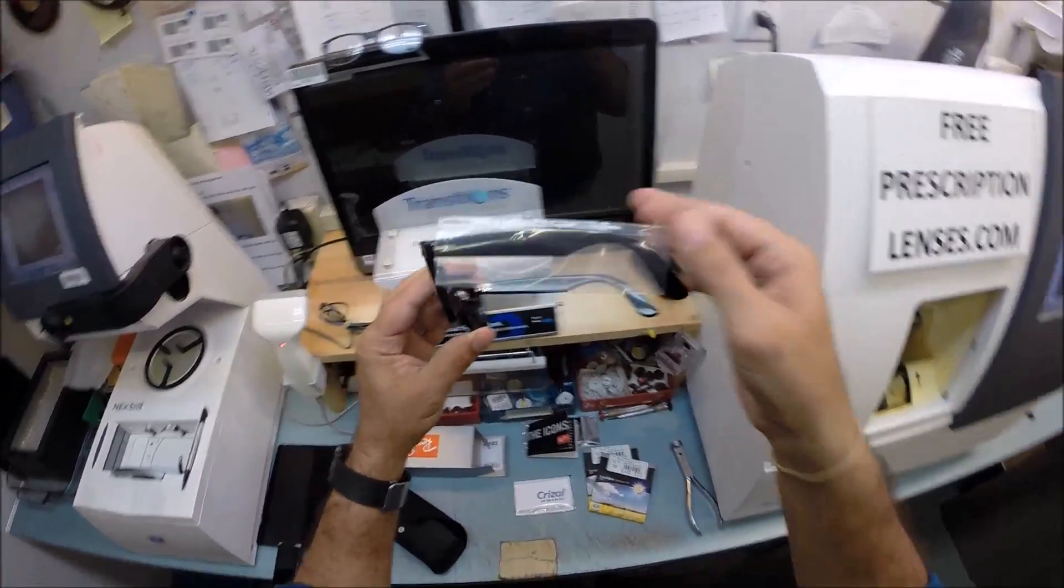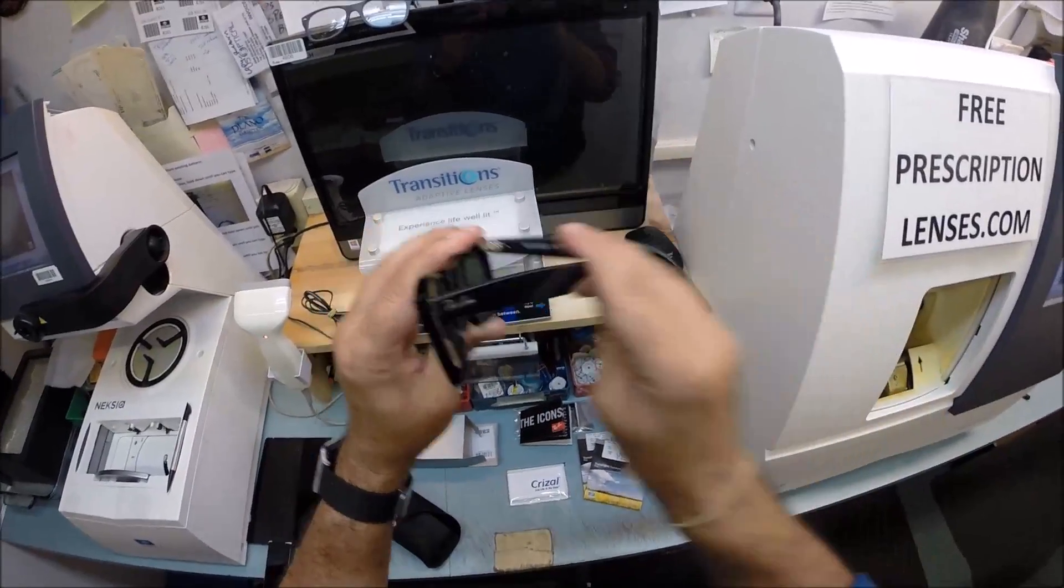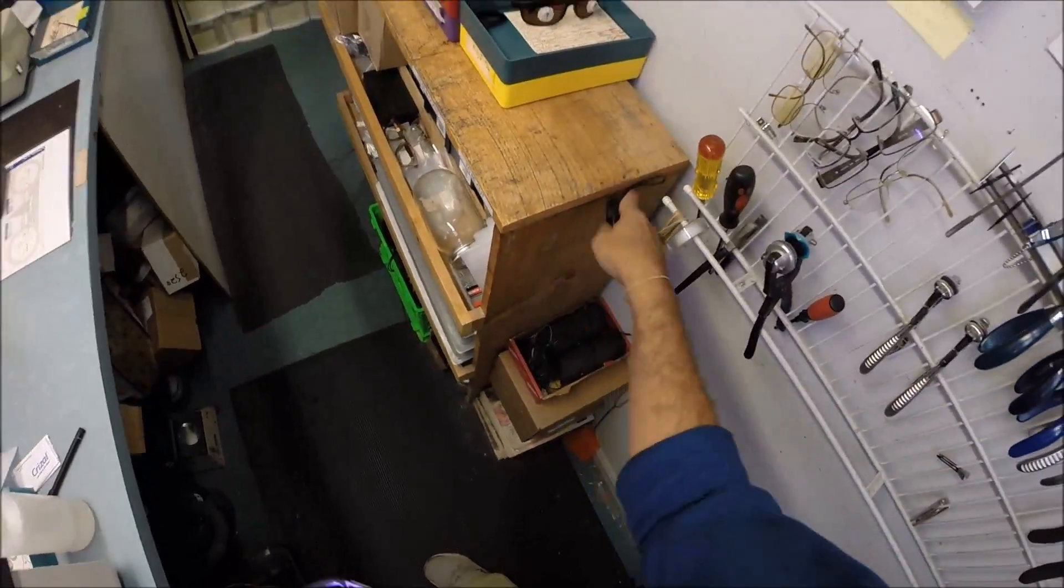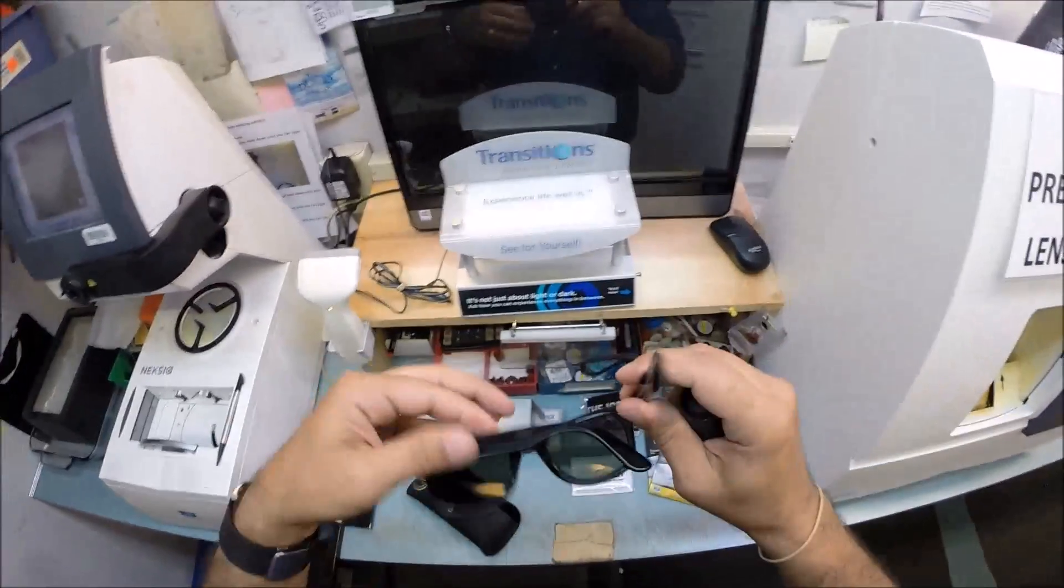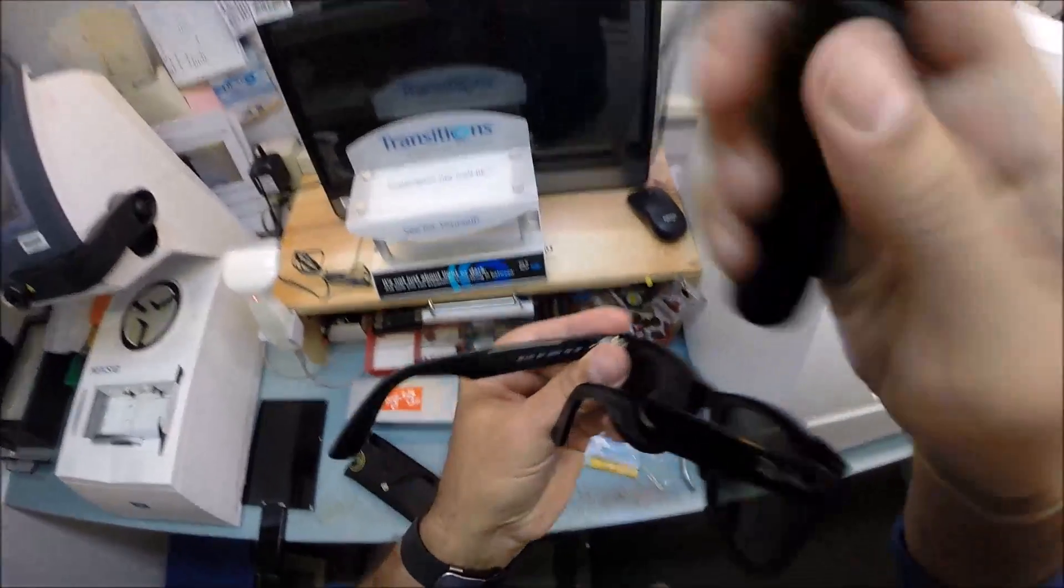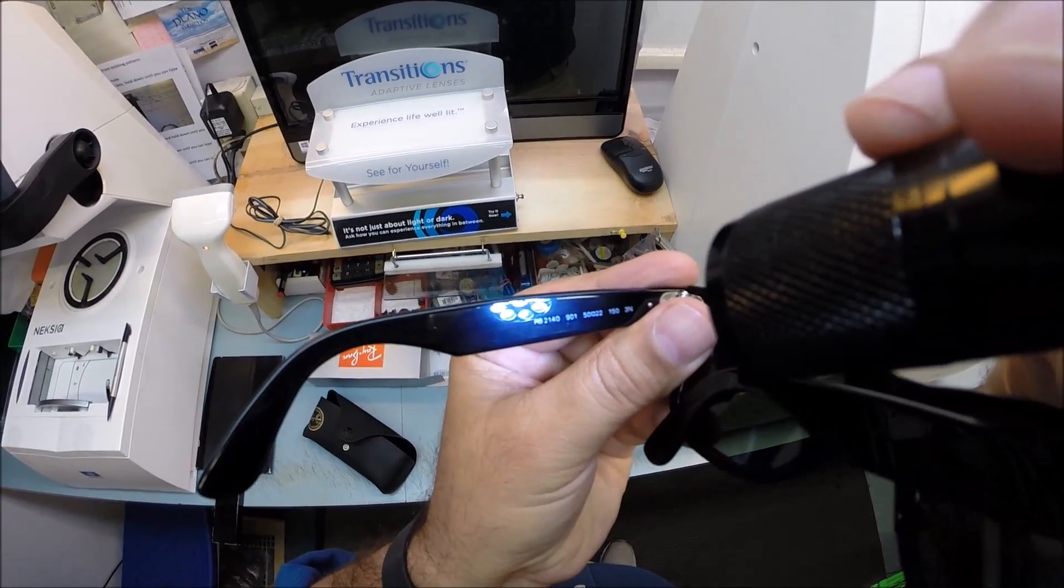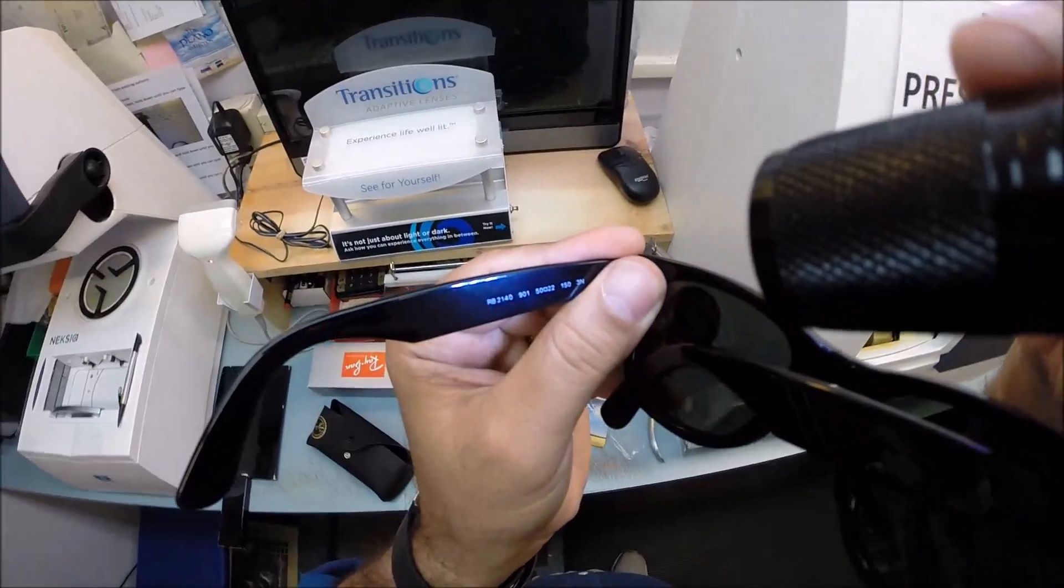Comes with a little plastic sleeve on the left temple to protect the temples from rubbing together while being shipped from Italy as all Ray-Ban sunglasses are. This is the Ray-Ban 2140, the original Wayfarer, handmade in Italy, color 901 the classic shiny black in the 50 eye size.